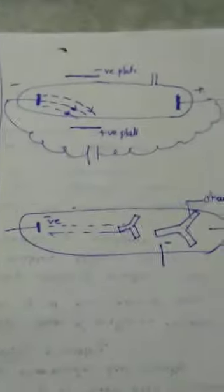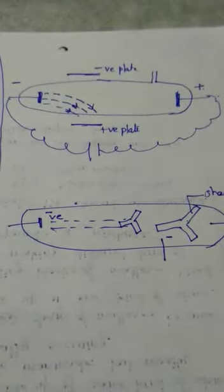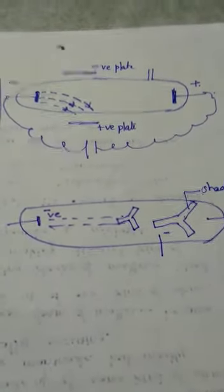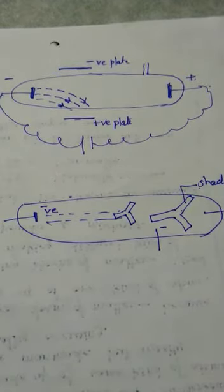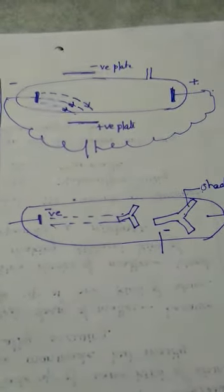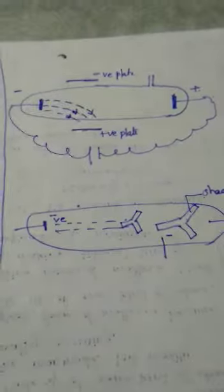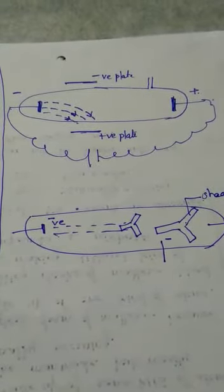Then the particles which are present in the cathode rays were shown by placing some opaque object in the way of those particles. The particles will be obstructed and they will cast a shadow.